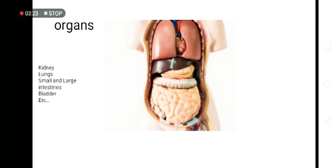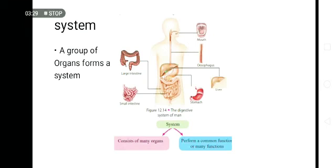These are some organs. You can see kidneys, lungs, small and large intestines, bladder, etc. System: a group of organs form a system.